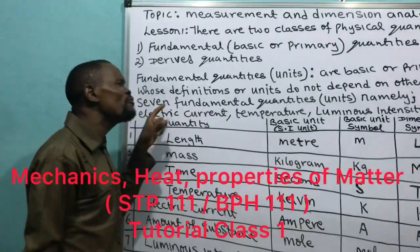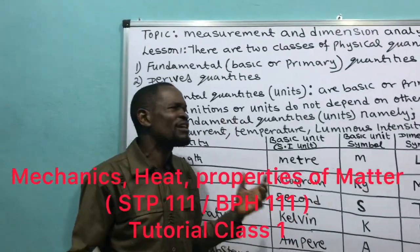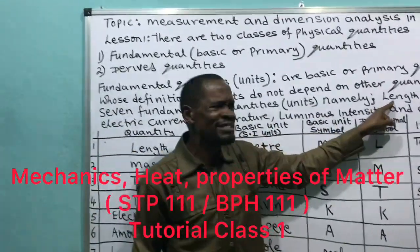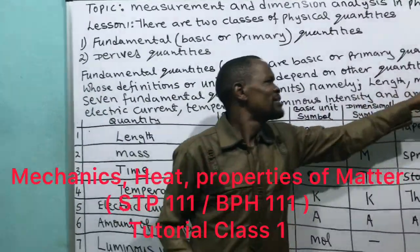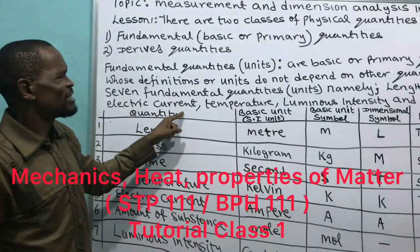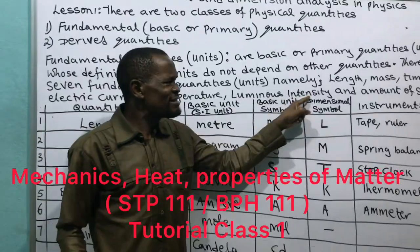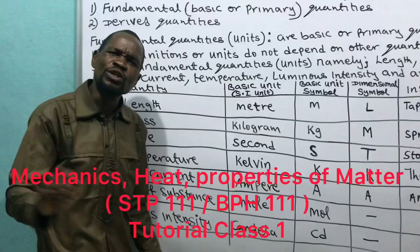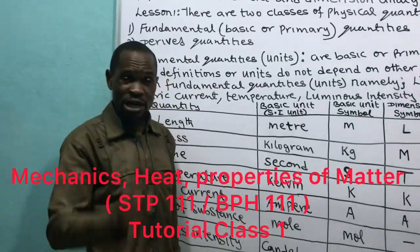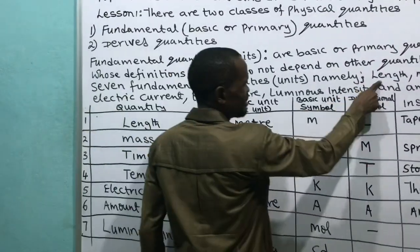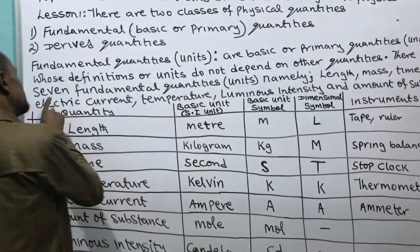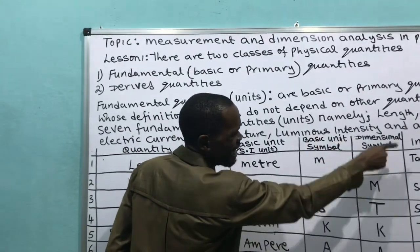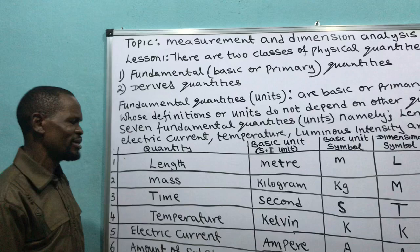There are seven fundamental quantities: length, mass, time, electric current, temperature, luminous intensity, and amount of substance. These seven fundamental quantities are not created from anybody but are created by God. Let us take them on this table.